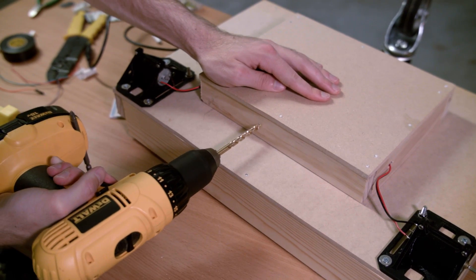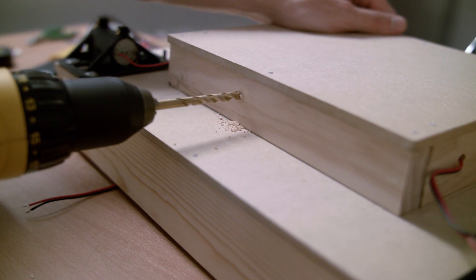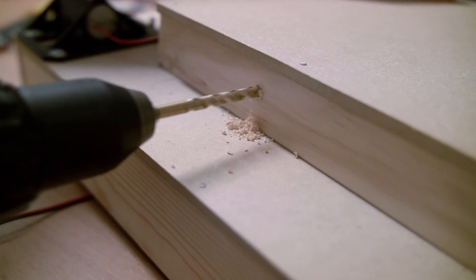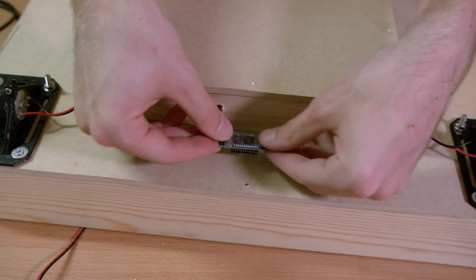I drilled another hole up front. This was for our Bluetooth module. I wanted to get a bit more range out of that module. So instead of putting it inside of the electronics box, I decided to mount it on front.